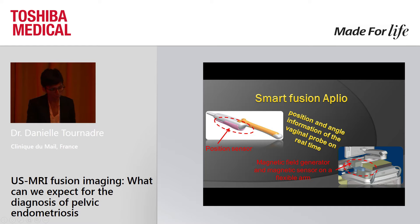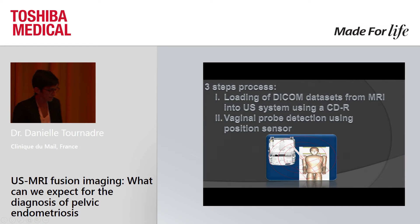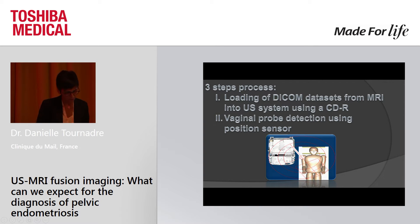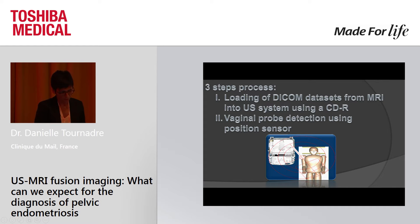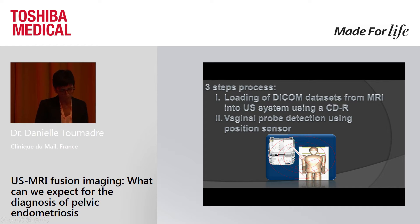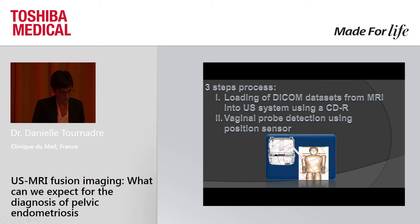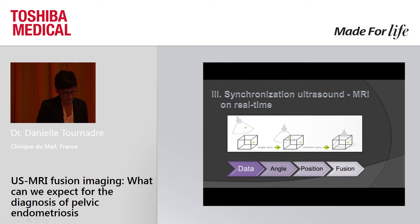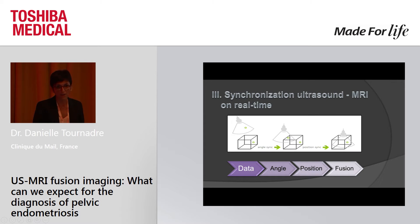The procedure is very simple. First, the CD pelvic MRI is loaded into the system. Then the patient is placed in the lithotomy position and the transmitter is located close to the patient in order to keep the magnetic sensor within 40 cm of the magnet during the procedure. The final step is synchronization — alignment in space of MRI and ultrasound data by correcting position and angle of each image with respect to each other.